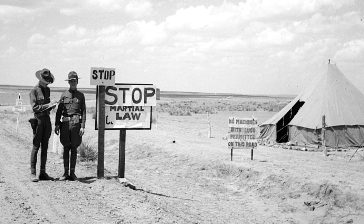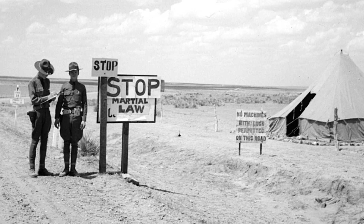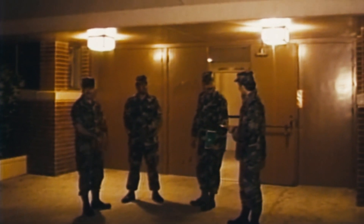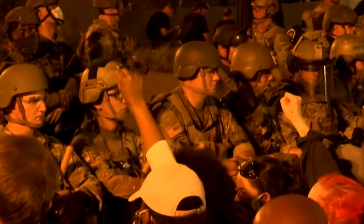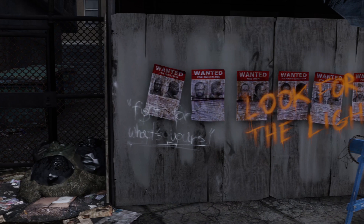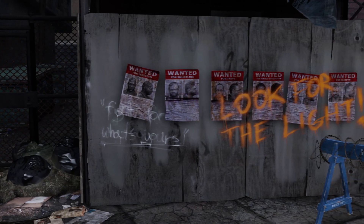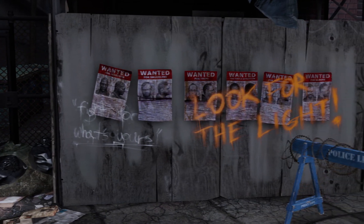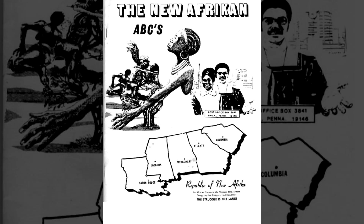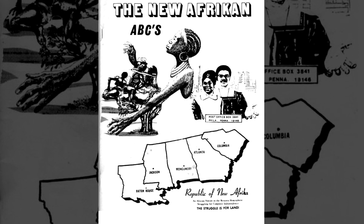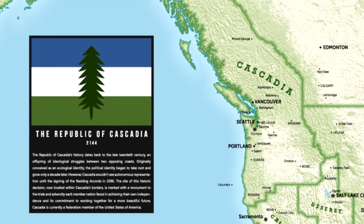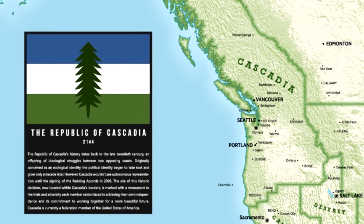Under martial law, authorities can enact curfews and demand identification papers in public. Despite martial law rarely being declared in recent history, the military has been deployed on some occasions, such as the 1992 riots in Los Angeles and the recent George Floyd protests. The main opposers of military rule in The Last of Us are the revolutionary group the Fireflies, who aim to eventually restore the US government. Such a group is not uncommon — there are many active and historical rebel militia groups fighting against military and government control, including some in the US.